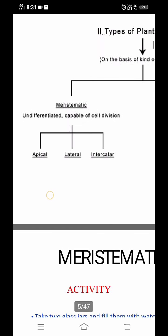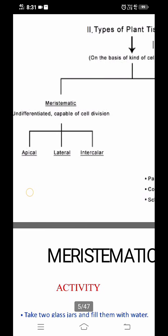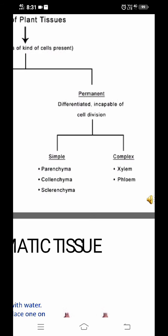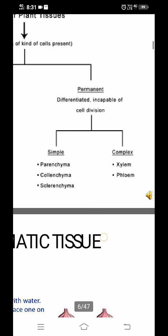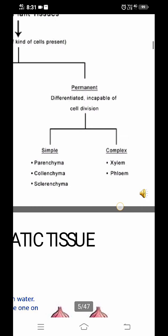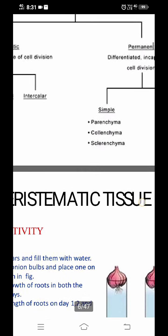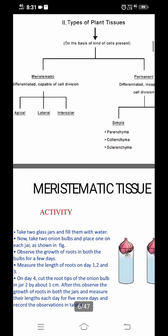Meristematic tissue is divided into apical, lateral, and intercalary. Permanent tissue is divided into simple and complex. Under simple tissue: parenchyma, colenchyma, and sclerenchyma. Under complex tissue: xylem and phloem. We will go through each tissue one by one.